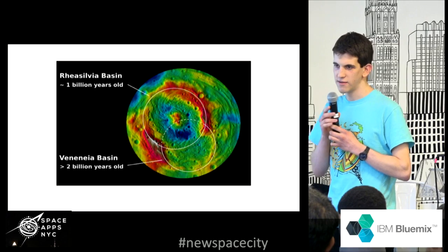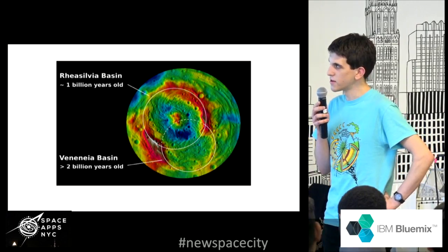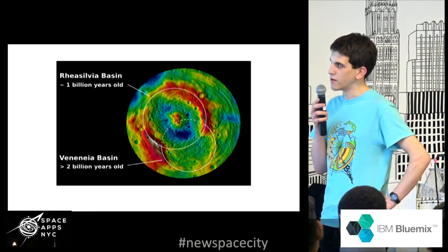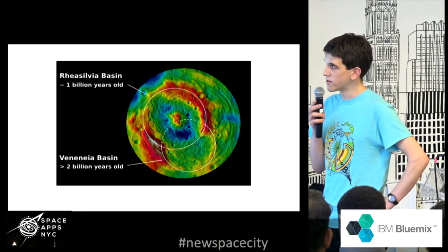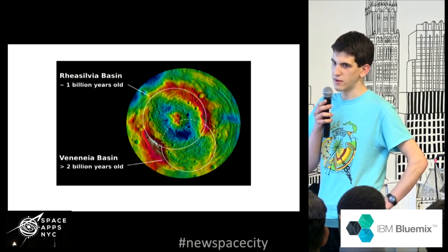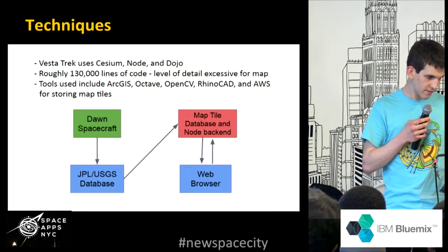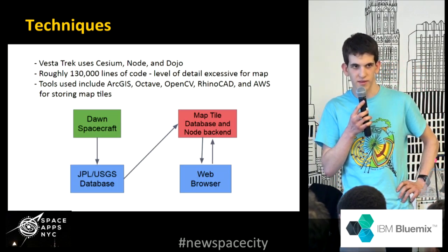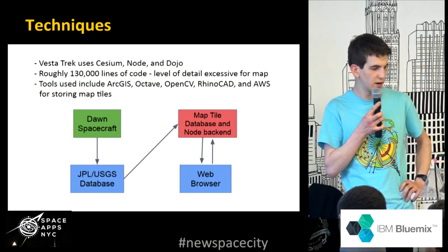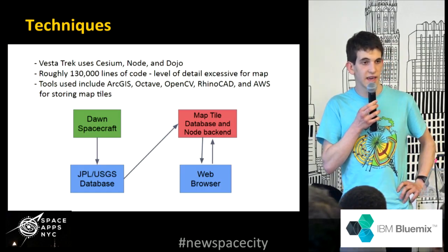This is some detail on the southern pole of Vesta. It has a large impact crater called the Venenia basin at the bottom, which is thought to have been formed roughly 2 billion years ago. There's also a newer one called the Rea Silvia basin, which is 1 billion years old. You can see that these two clearly didn't happen at the same time.